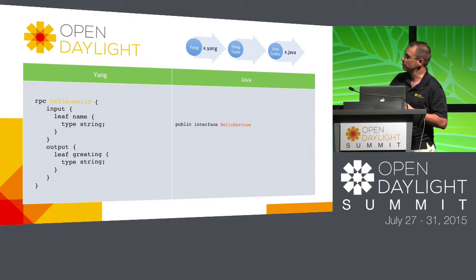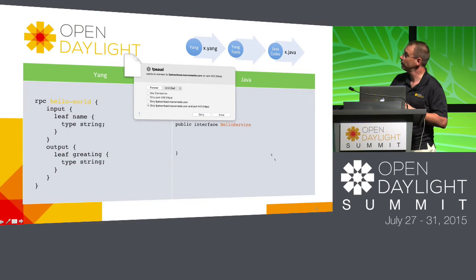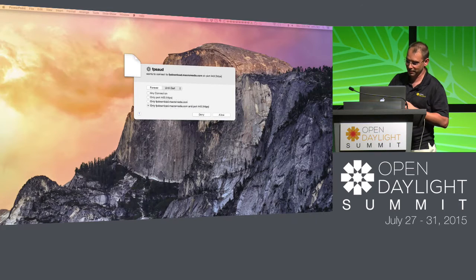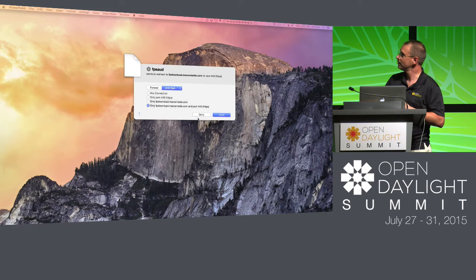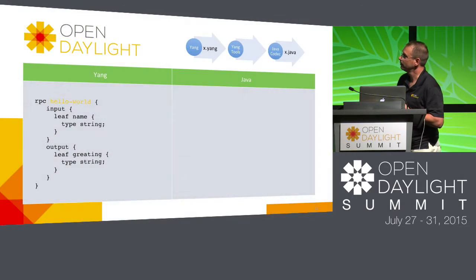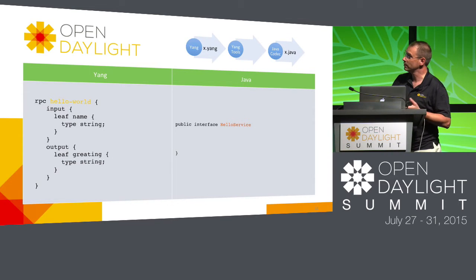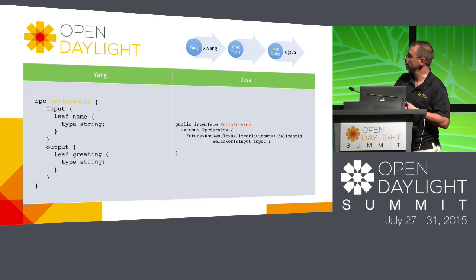Here's a more interesting example — generating an RPC. You have an RPC definition with the input and output parameters defined. Here's how we generate the resulting Java code for that RPC definition.